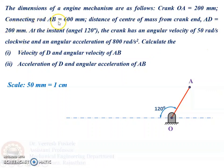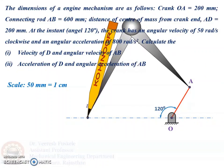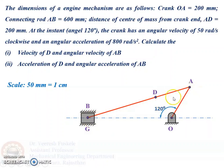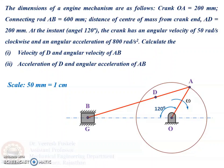Next, we need to draw the connecting rod AB. The point B will lie on this center line. We take up a distance of 600 mm according to the scale selected on the compass and cut the distance on this center line to get point B. At this point, the slider is placed. The slider will be moving between these guides. We join B to A — this will be the connecting rod AB. Then we have point D on AB such that AD equals 200 mm. The crank rotates at an angular velocity omega of 50 radians per second clockwise. This is the configuration diagram, and the motion of the slider will be horizontal between these guides.